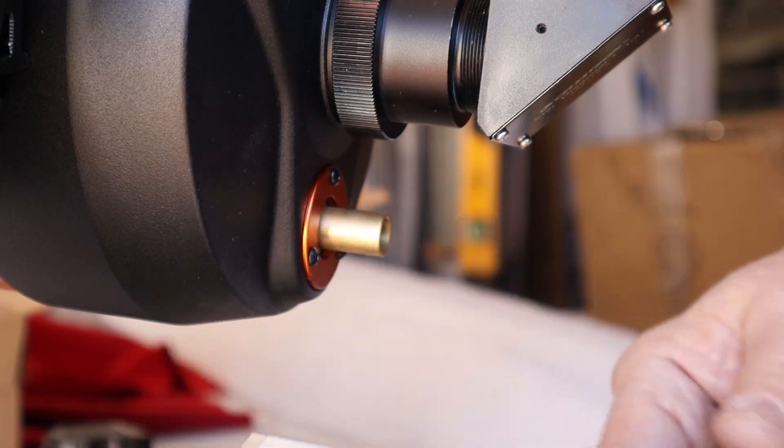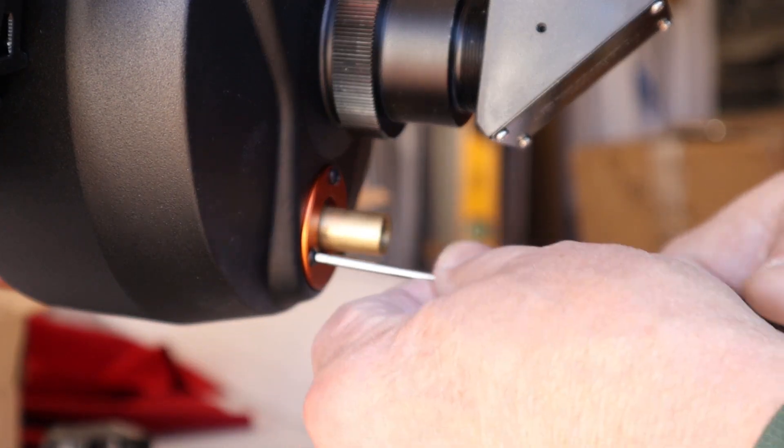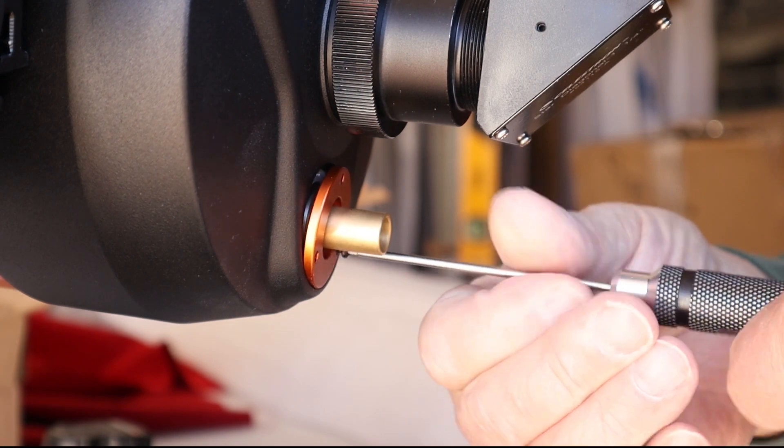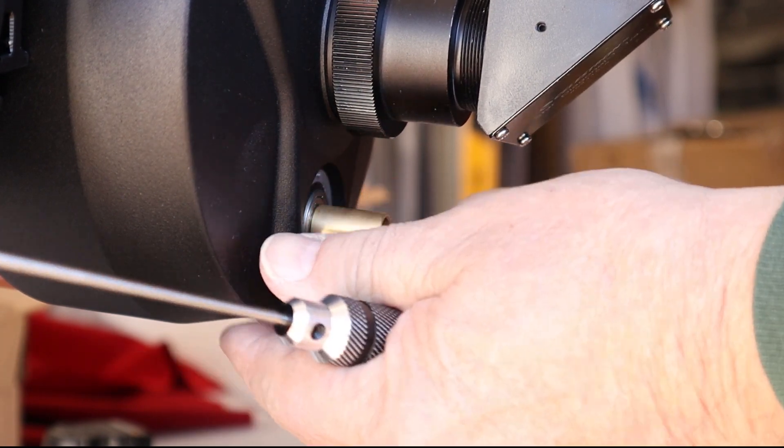Next, we use a 2mm hex wrench to remove the factory trim plate. I always save stuff like this because you never know, later on you might need a screw or something.